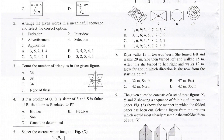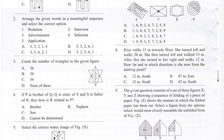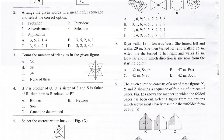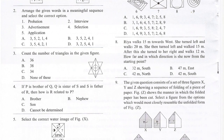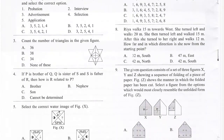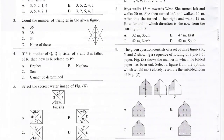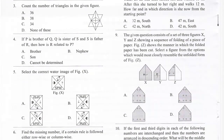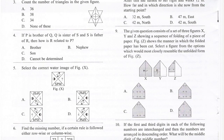Question 4: If P is brother of Q, Q is sister of S, and S is father of R, then how is R related to P? Question 5: Select the correct water image of figure X. Look at the figure X.